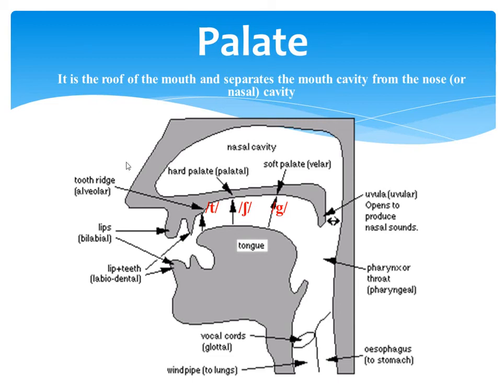So the roof of the mouth is called the palate and it has four main parts: the alveolar ridge, the hard palate, the soft palate, and the uvular.